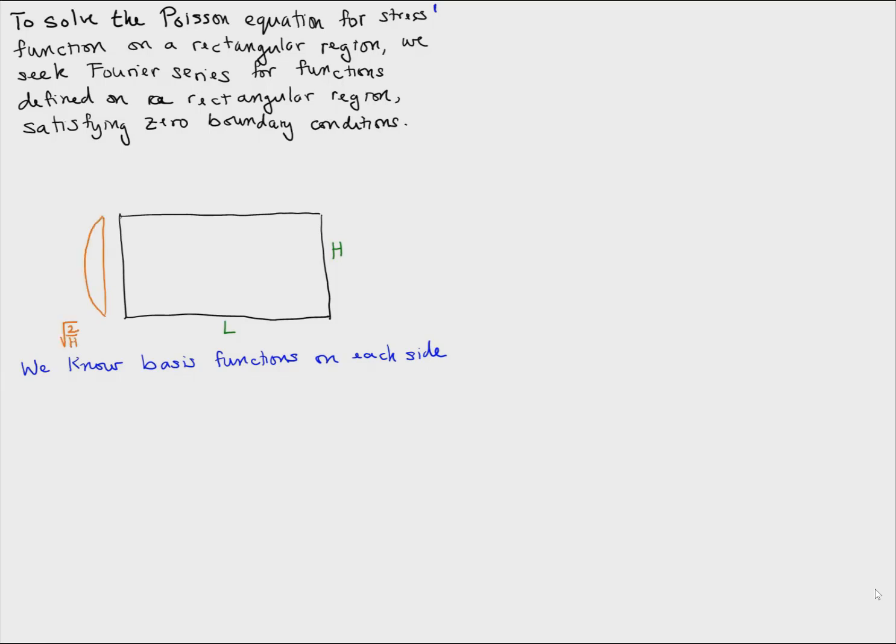On the H side we have basis functions making signs making half a cycle, one and a half cycles, and so on. We've seen this before.